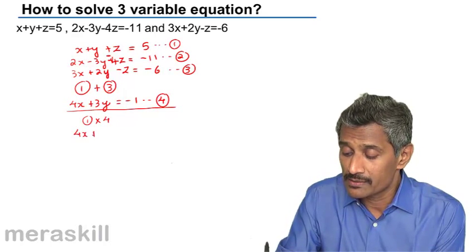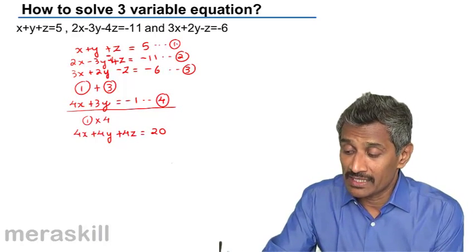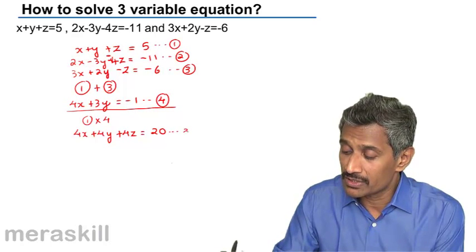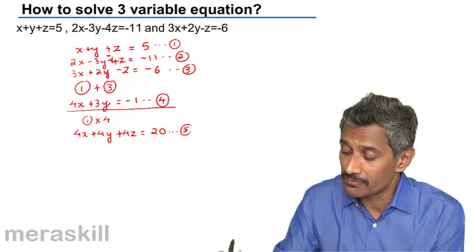If you multiply by 4, we get 4x plus 4y plus 4z is 20. The idea is to add after this, you can call it as equation 5.